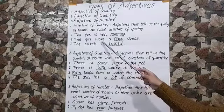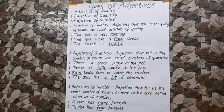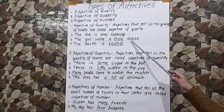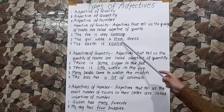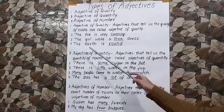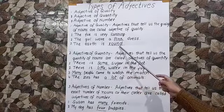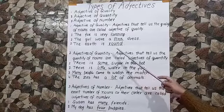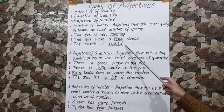The girl wore a pink dress. What color of dress? Pink dress. Pink tells us about the color of the dress, so pink is an adjective of quality in this sentence. The earth is round. Now round tells us about the shape of the earth, so round is an adjective of quality in this sentence.